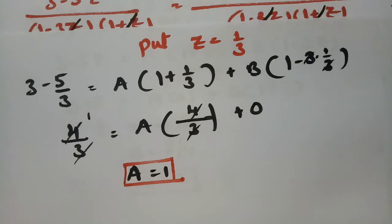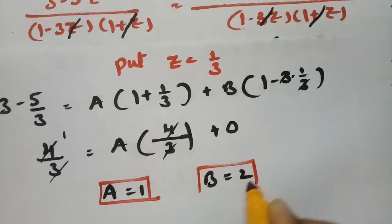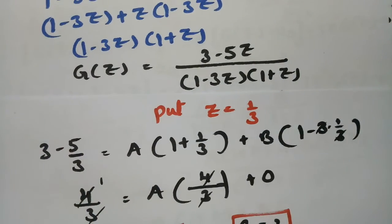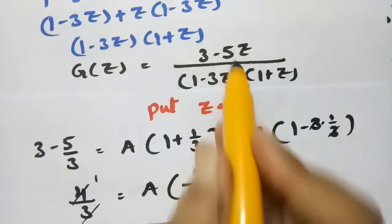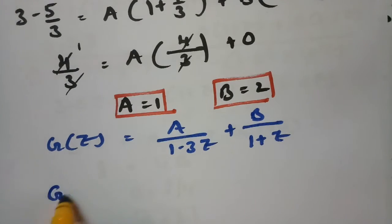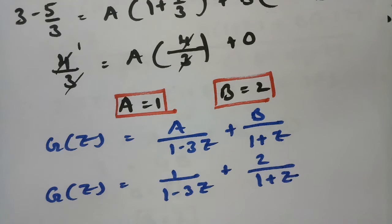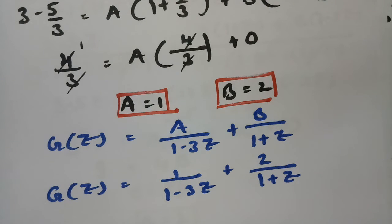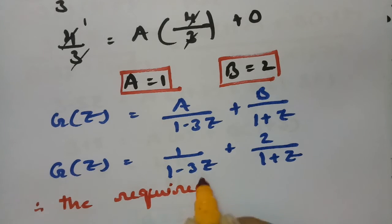We got the value of A as 1 and B as 2. Substituting back into the generating function: G(z) equals 1 divided by (1 minus 3z) plus 2 divided by (1 plus z).